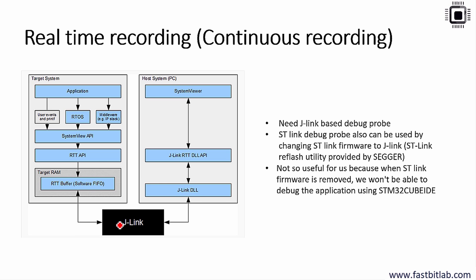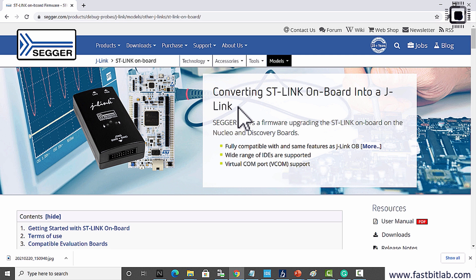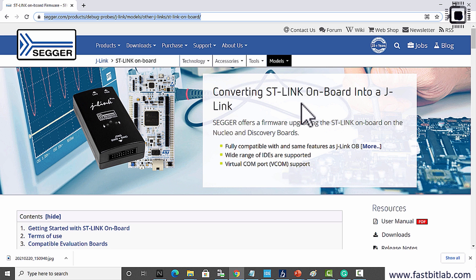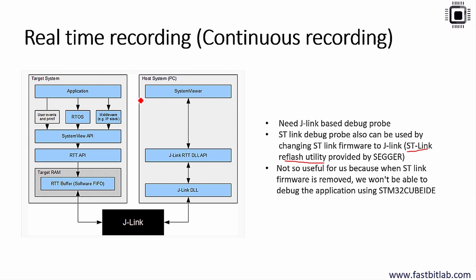If you want to use J-Link based continuous recording, you need a J-Link based debug probe. However, SEGGER provides an application called ST-Link Reflash Utility, which can convert the onboard ST-Link firmware of your STM32 discovery board into J-Link firmware. If you are using an STM32 discovery or Nucleo board, you can convert the onboard ST-Link firmware into J-Link without an external probe.